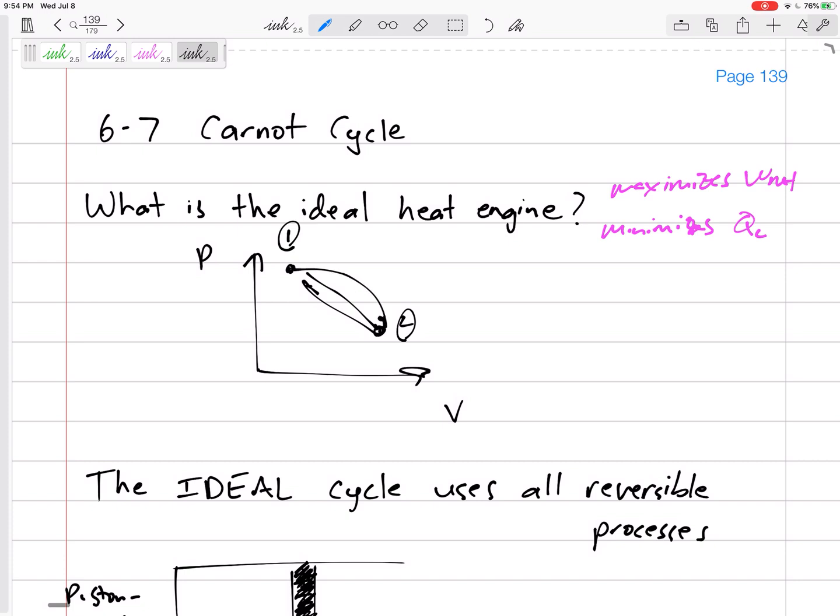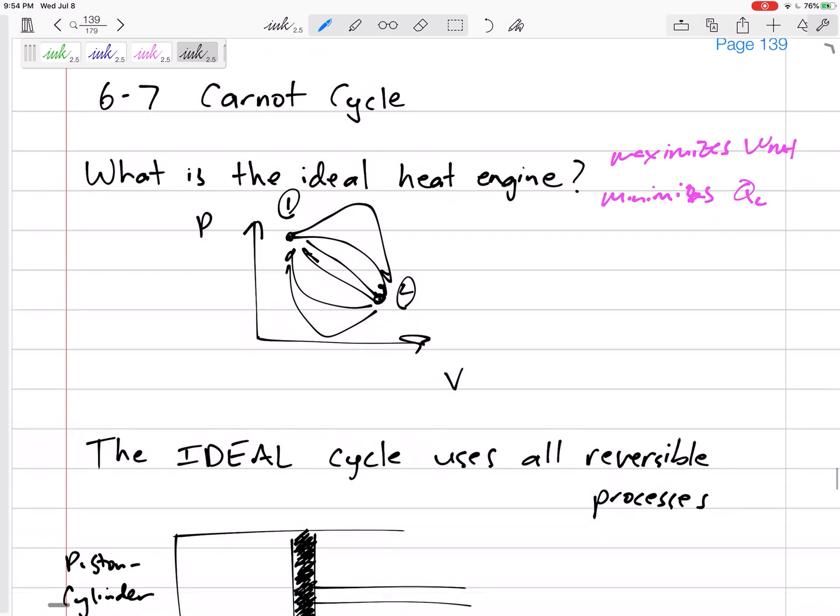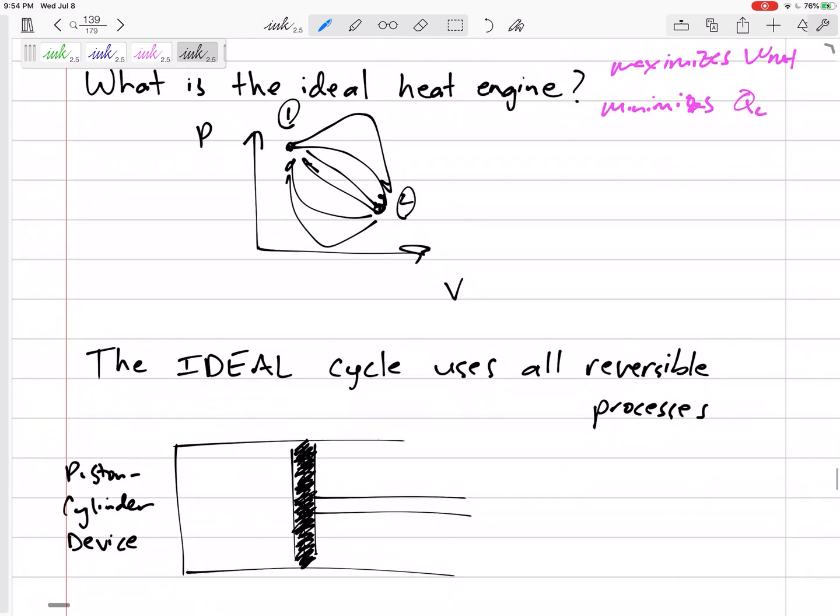Should we go straight here and straight here? Should we go here to here, here to here? What is the best way? Well, if we can find a way to get from 1 to 2 using all reversible processes, then that's our goal.